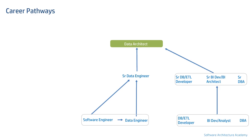An ETL developer can also follow the same trajectory. Another trajectory typically followed is in the subject area of business intelligence — a BI developer or analyst can become a senior BI developer or BI architect, enabling themselves to become a data architect. If you are into quality engineering with focus on database or automation, or if you are an SDET, you can move into one of these roles and follow the typical pathways. Back in the days, business analysts were actually the ones performing key data architecture activities like data modeling and designing.